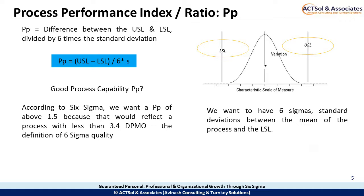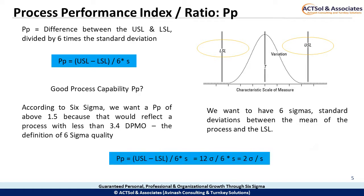See how that is reflected in the equation: PP equals USL minus LSL divided by 6s. Let's replace USL minus LSL with 12 sigma. So PP is equal to 12 sigma divided by 6s, which is equal to 2 sigma divided by s.